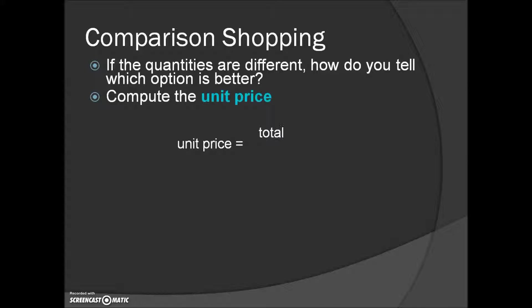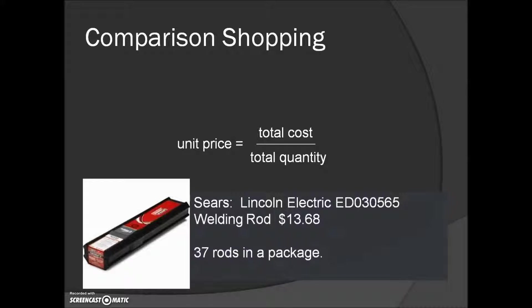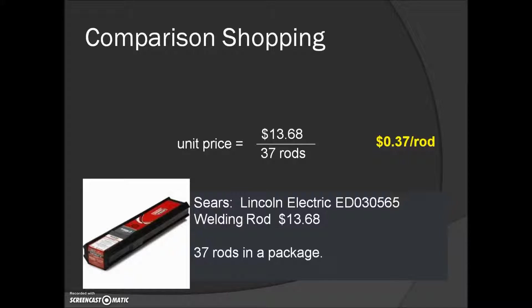The unit price is calculated by the formula: total cost divided by total quantity. Here's an example — we have some welding rods costing $13.68 in a package containing 37 rods. We replace total cost with $13.68 and total quantity with 37 rods, then do the division: $13.68 divided by 37, resulting in a unit price of 37 cents per rod.